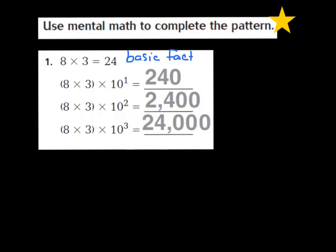In the next part of the problem, they take our 8 times 3, but this time they're going to multiply it by the first power of 10. When I multiply by the first power of 10, that means my exponent is a 1. What happens is I'm going to take my 24, which was my product from my basic fact, and to that 24, we're going to add 1 zero. So my exponent is a 1, and I've now added 1 zero to my 24.